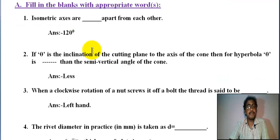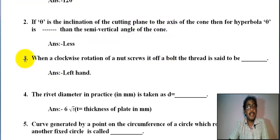Number two: if theta is the inclination of the cutting plane to the axis of the cone, then for hyperbola theta is less than the semi vertical angle of the cone.